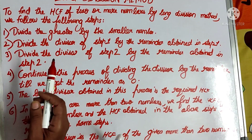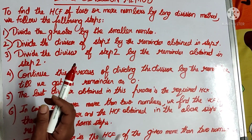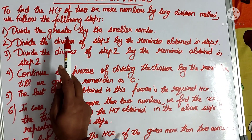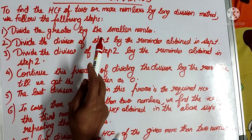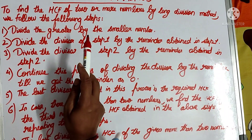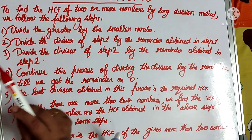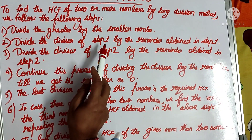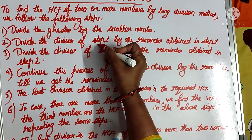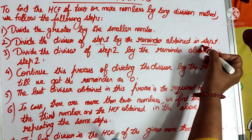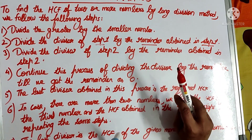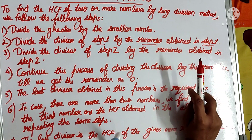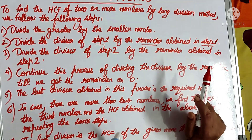To find the HCF of two or more numbers by long division method, here are the steps. First, divide the greater number by the smaller number. Second, divide the divisor of step 1 by the remainder obtained in step 1.